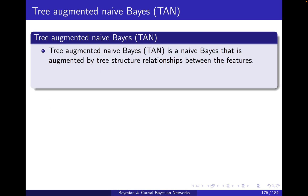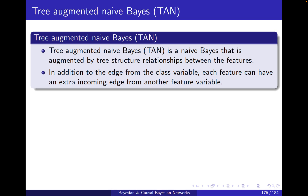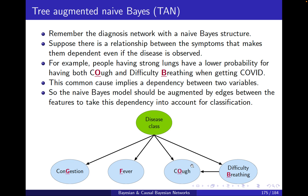To formalize: Tree-Augmented Naive Bayes, or TAN, is a Naive Bayes that is augmented by tree-structure relationships between the features. In addition to the edge from the class variable, each feature can have an extra incoming edge from another feature variable. Why a tree structure? For the same reasons discussed in the score-based section — tree-structured networks reduce the search space. They are simple, easy to learn, and we will use them.